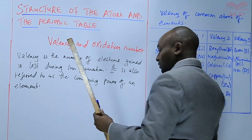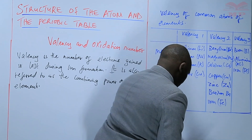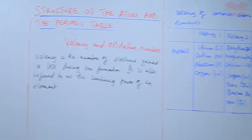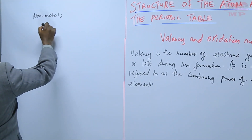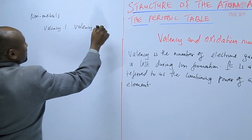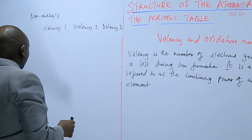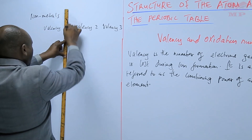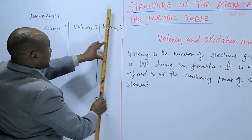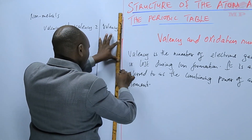Next, we look at non-metals. Non-metals are those that have a valency of 1, valency of 2, or valency of 3. These are generally the ones that gain electrons during ion formation.